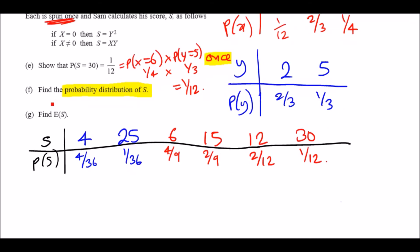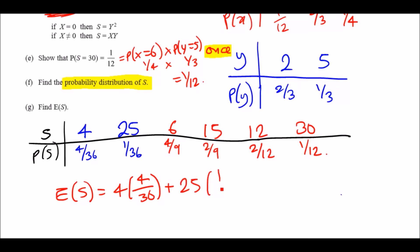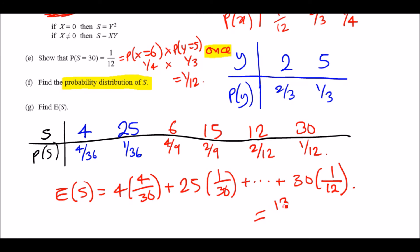Part G — find E[S]. Multiply each value of S by its probability and sum: 4 × 4/36, plus 25 × 1/36, plus 6 × 4/9, plus 15 × 2/9, plus 12 × 2/12, plus 30 × 1/12. This gives 137/12, which is approximately 11.42 to two decimal places.